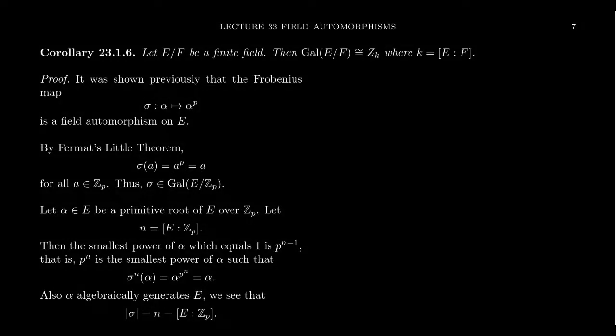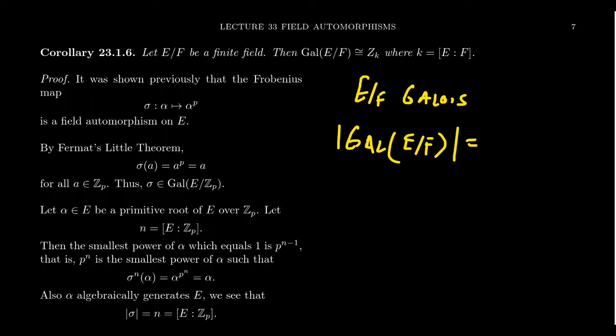So we just proved in our previous video, if E over F is a finite Galois extension, then the order of the Galois group of E over F is equal to the degree of the extension E over F. We're going to use this result to compute the Galois groups of every finite field. Imagine we have some finite fields E over F.